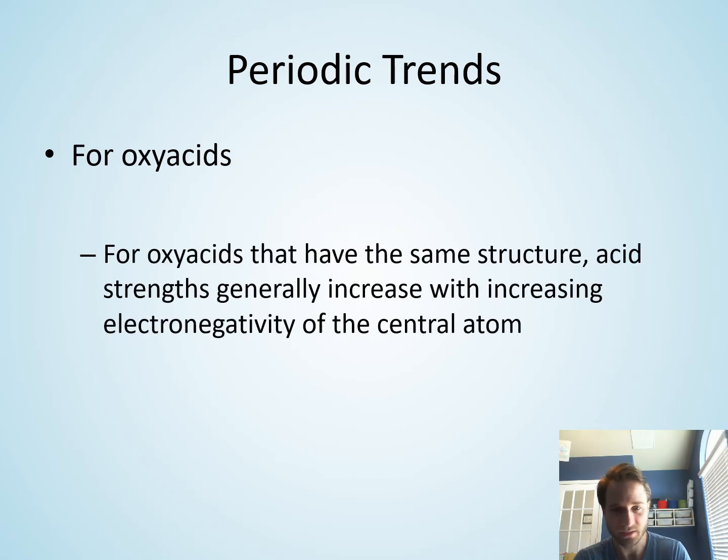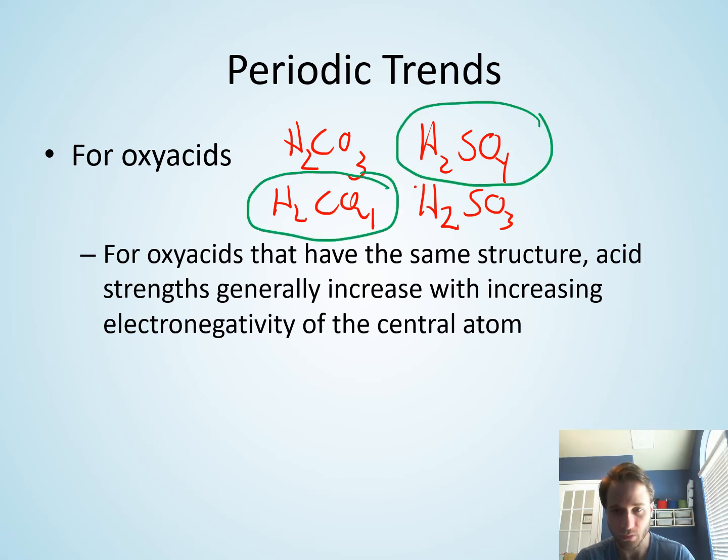And then for oxyacids - so an oxyacid is like H2CO3 or H2SO4 or H2CO4 or H2SO3, these are different oxyacids. If you're comparing H2CO4 with H2SO4, typically the strength of the acid increases with increasing electronegativity of the central atom. So comparing these two, H2SO4 is going to be the stronger acid because sulfur is more electronegative than carbon.